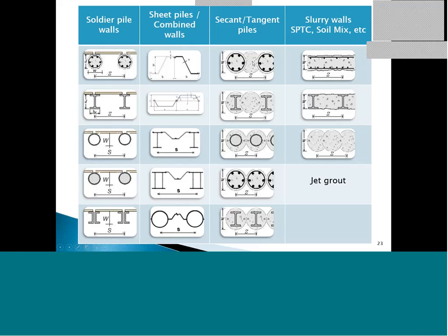We also have secant pile walls with an overlap of unreinforced and reinforced piles — reinforcement can be reinforced concrete or a steel beam. Then tangent piles, where piles basically touch each other. For heavier construction we have diaphragm walls or slurry walls, quite common and can also be used as permanent supports. We also have soldier pile and cement concrete soil mixed walls, jet grout, and ground freezing. There are different methods of constructing walls.